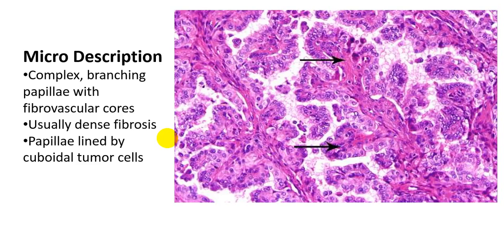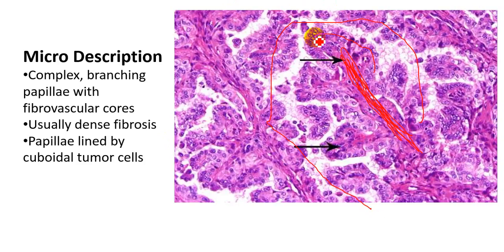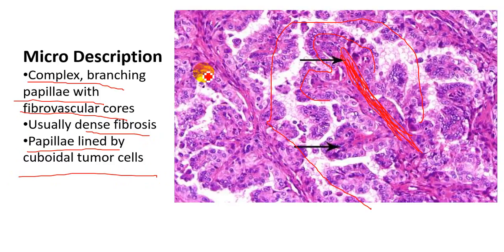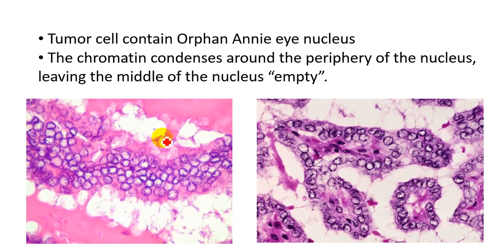This is the microscopic image of papillary carcinoma of the thyroid gland. You can see branching papillae here. The papillae consist of a central fibrovascular core, which is lined by cuboidal tumor cells. It consists of complex branching papillae with fibrovascular core, and you can see dense fibrosis.